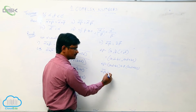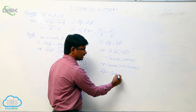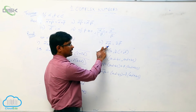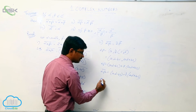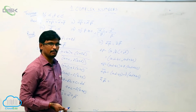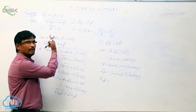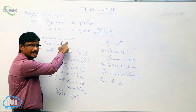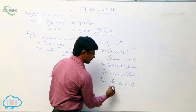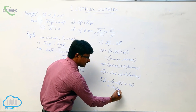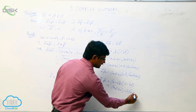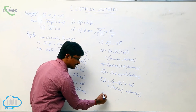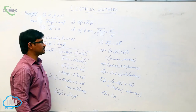Now, the conjugate of alpha times beta is AC minus BD minus i(AD plus BC). This is alpha beta complement. Now finding alpha complement times beta complement: alpha complement is A minus iB, and beta complement is C minus iD. Multiplying these two gives AC minus BD minus i(AD plus BC). Observing both results, the RHS is the same, so LHS is also the same. This proves the second property.